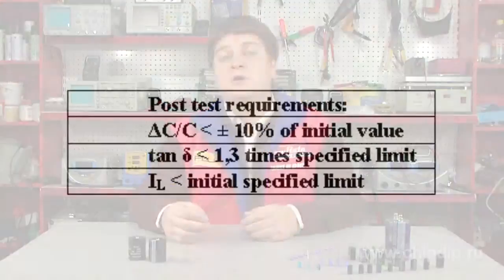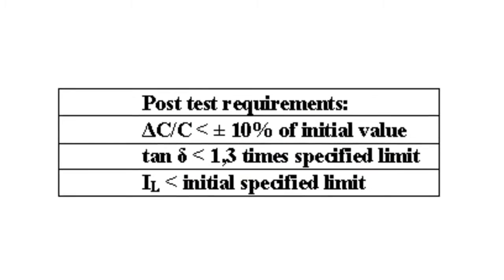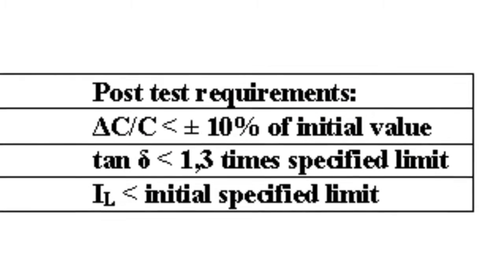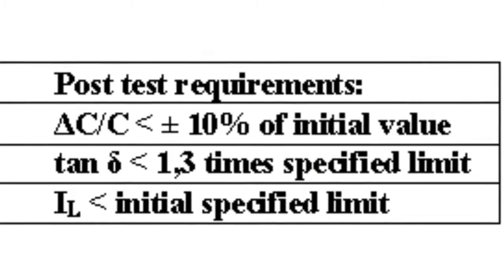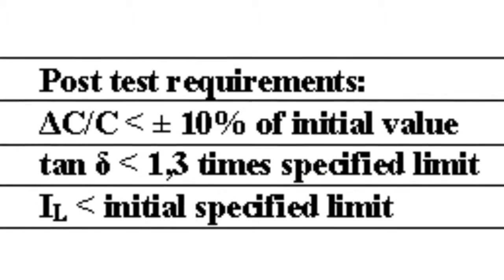In the technical specifications there can be another term that could be mistakenly considered an indicator of the life of the capacitor. This term is endurance. Conditions for such a test are as follows: the rated voltage is applied at a certain temperature, but without current flow. The following criteria should be satisfied to pass the test: capacity is reduced by no more than 10%, loss tangent increases by no more than 30%, and leakage current is within specification.